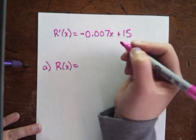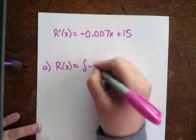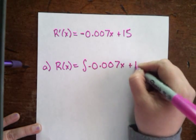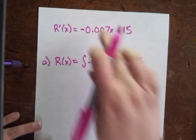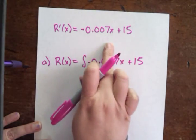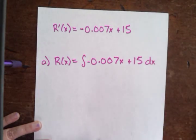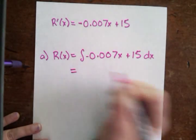So what we're looking for is the integral of negative 0.007x plus 15. So you're just going to take whatever they gave you as your marginal revenue function and you're going to find the integral of that. And that's with respect to x. So let's do that.